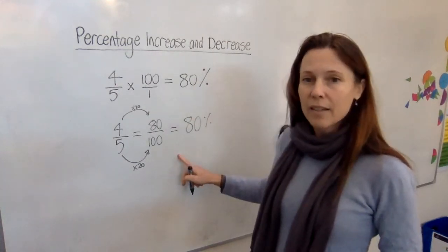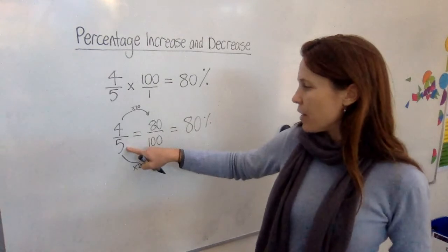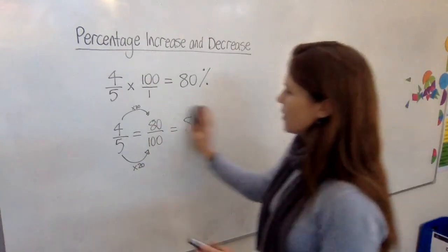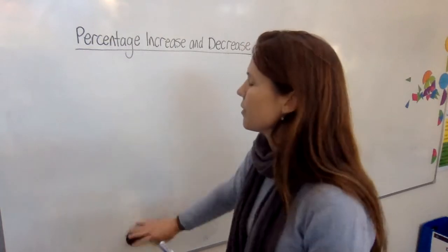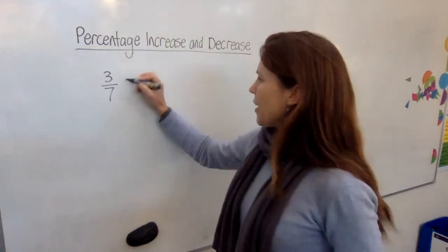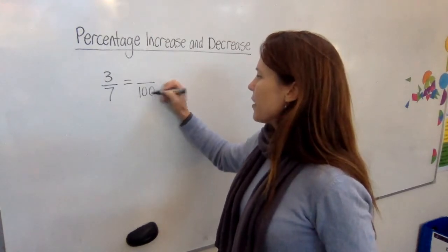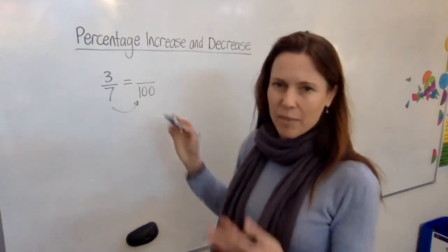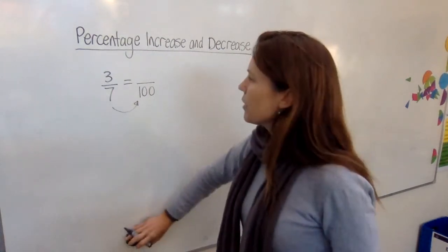That method's probably easier, but it only works nicely for numbers that are factors of 100. As soon as you've got something awkward there, let's imagine we had something like we're trying to convert three-sevenths, and we said, what's that out of 100? And you're going to get stuck here wondering what to multiply the seven by exactly because it's not going to be a whole number, so it gets a bit awkward.